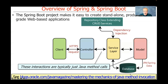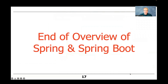The interactions between the controller, the service layer, and the model are typically just standard Java calls, assuming you're doing the Java version. Whereas the calls that go from the client into the controller are done via HTTP. There are all kinds of different variants of this that we'll get into further along — this is just a high-level view.